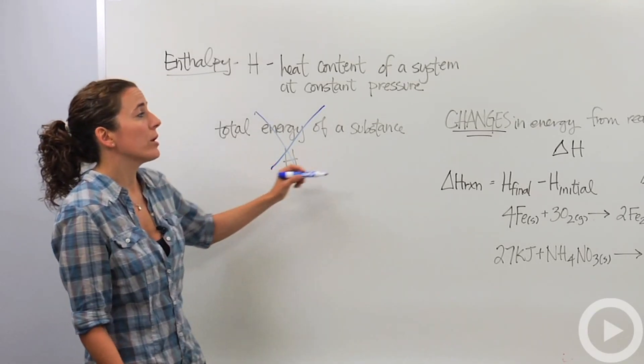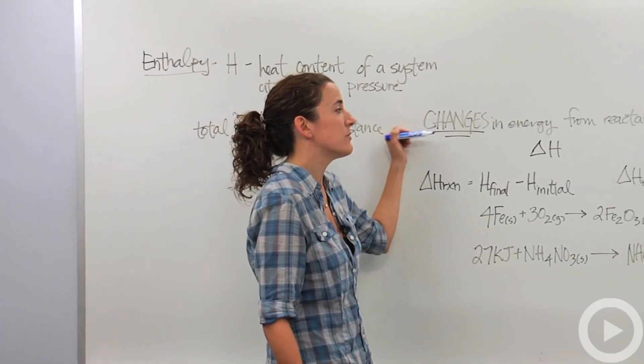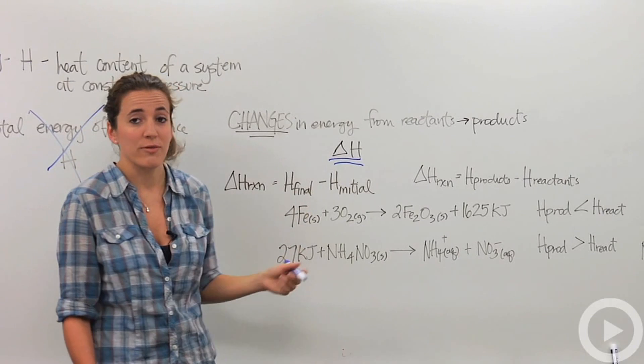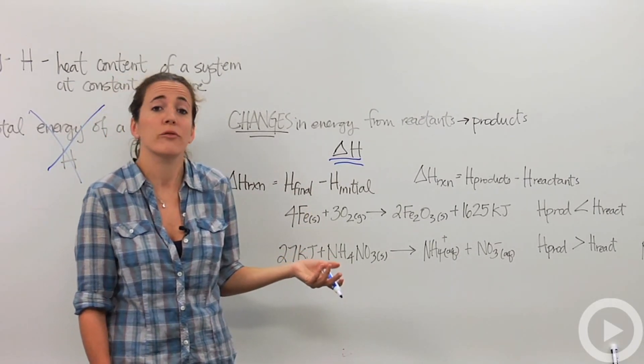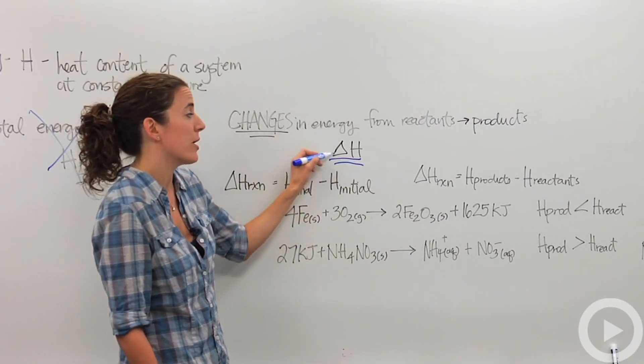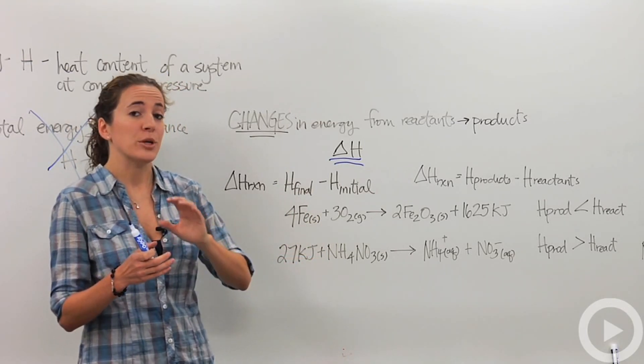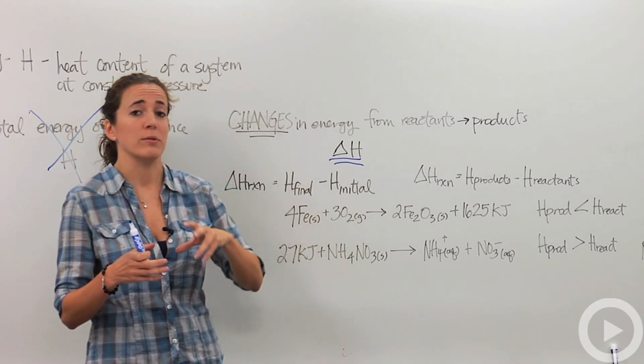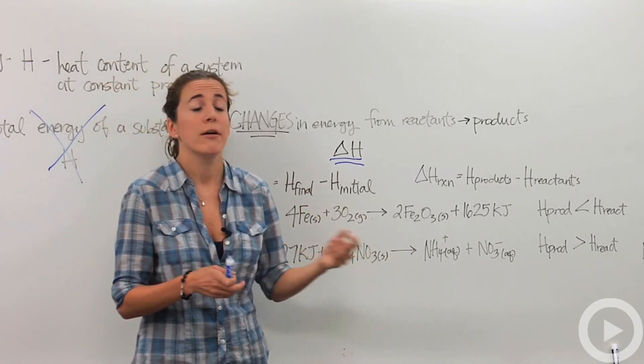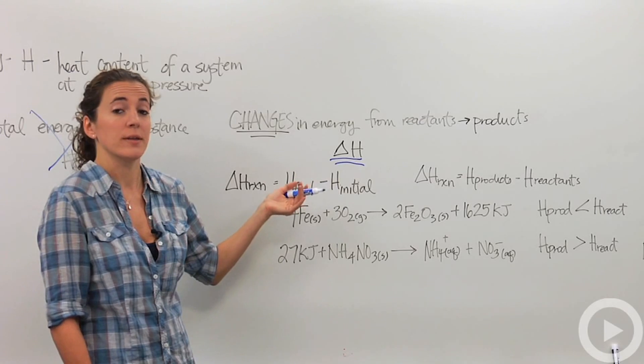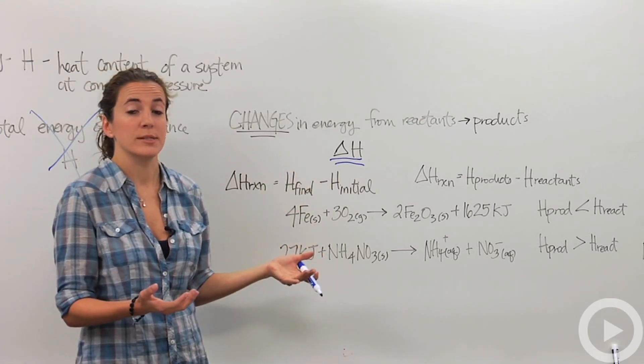So we're going to talk about delta H or changes in energy from reactants to products. You're going to see this way more often than just H. In fact, I doubt you'll ever see just H by itself without the triangle, meaning change of. So we can talk about how the energy changes as we go from reactants to products or as we go from one system to another. And we're going to call that delta H, which is actually much more valuable than just a single substance alone.